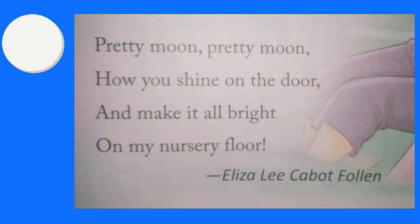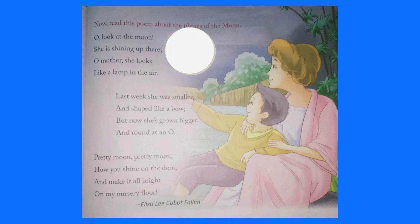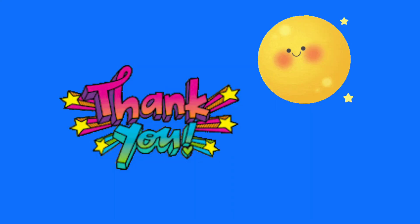So children, this poem is a little child's views on the moon. While reading this poem, you can understand what the child has to say about the moon. Hope you understood the meaning of this poem. All of you read this poem, learn it, and complete your work. Thank you.